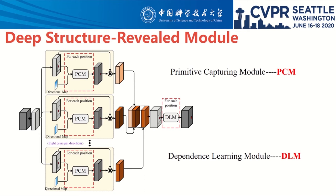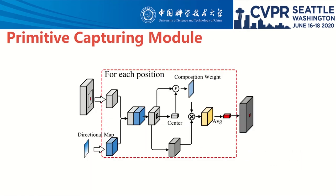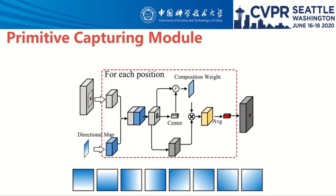Our proposed deep structure-rebuild model is illustrated here. For primitive elements in textural images, we need to capture them locally under the guidance of different spatial contexts. Therefore, a Primitive Capture Module is devised to generate candidate primitives with provided spatial context constraints. We mainly consider the contexts in eight directions: up, down, left, right, left-up, right-upper, left-bottom, and right-bottom. A directional map with the same size as the convolution kernel is provided as local context guidance in the convolution process.